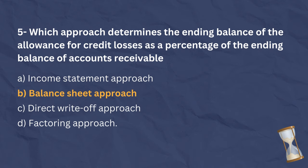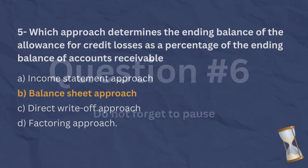The correct answer is B. The balance sheet approach determines the ending balance of the allowance for credit losses as a percentage of the ending balance of accounts receivable. This method considers the relationship between the allowance and the total accounts receivable balance.